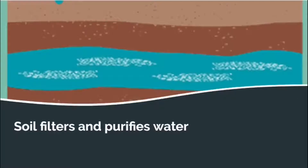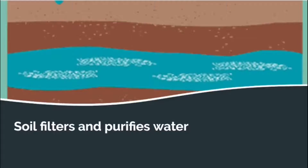Soil stores water by filtering and purifying it, and thus forms underground water. It performs this function because it consists of pores, and these pores get filled up with air and water. The amount of pores in the soil is different in different types of soil — clay soil holds a large amount of water, while sandy soil holds very less water because the water dries up very quickly.